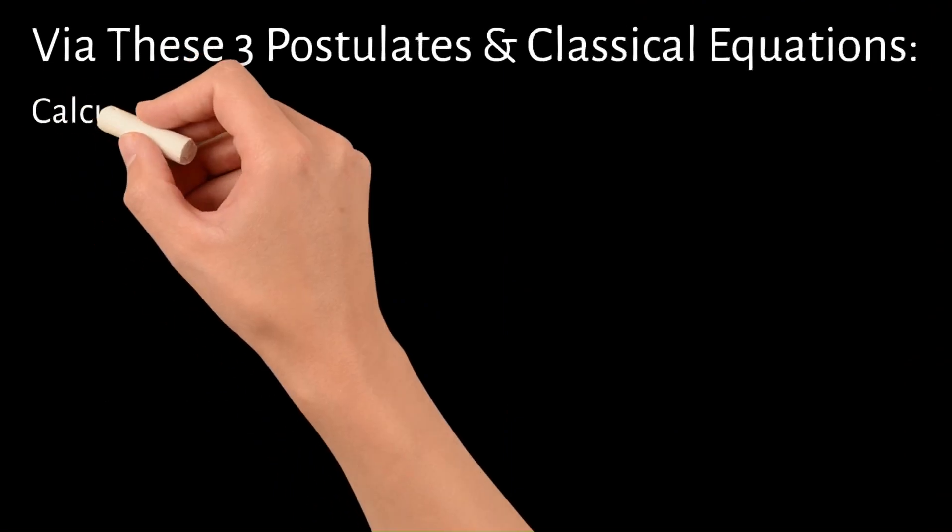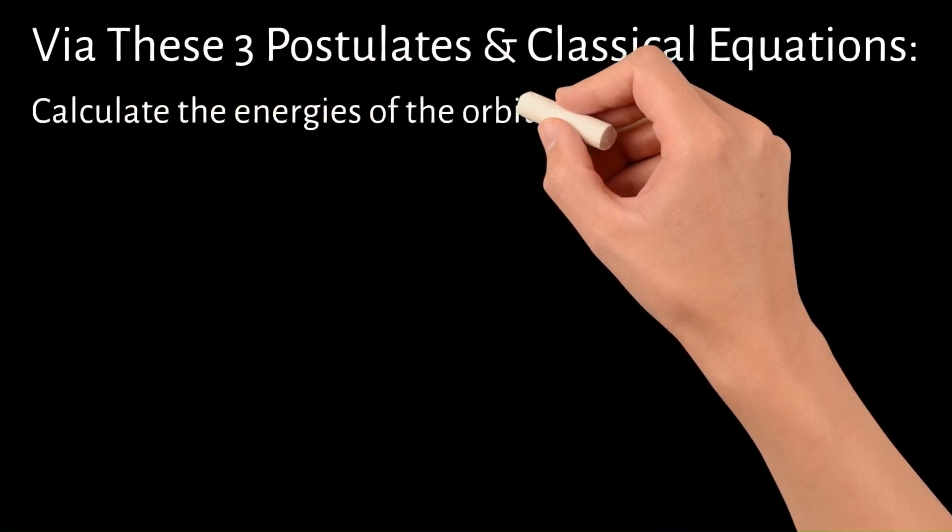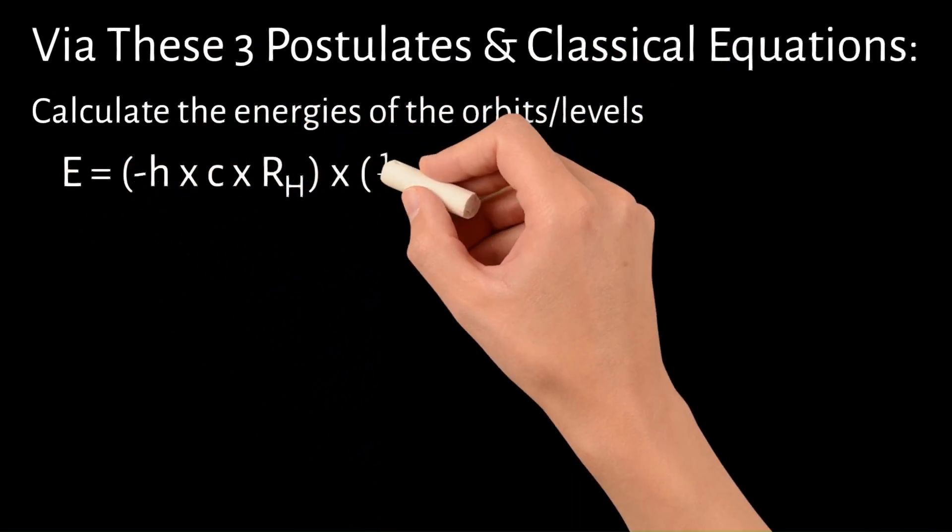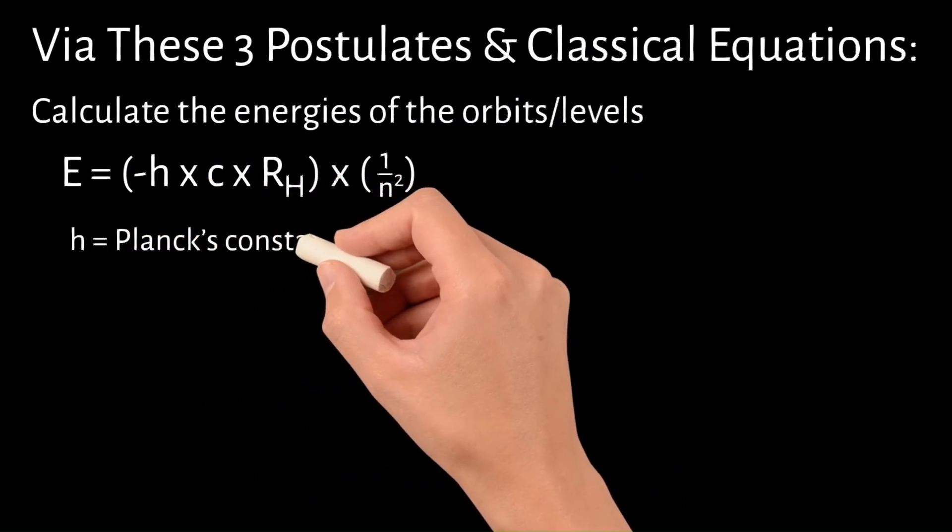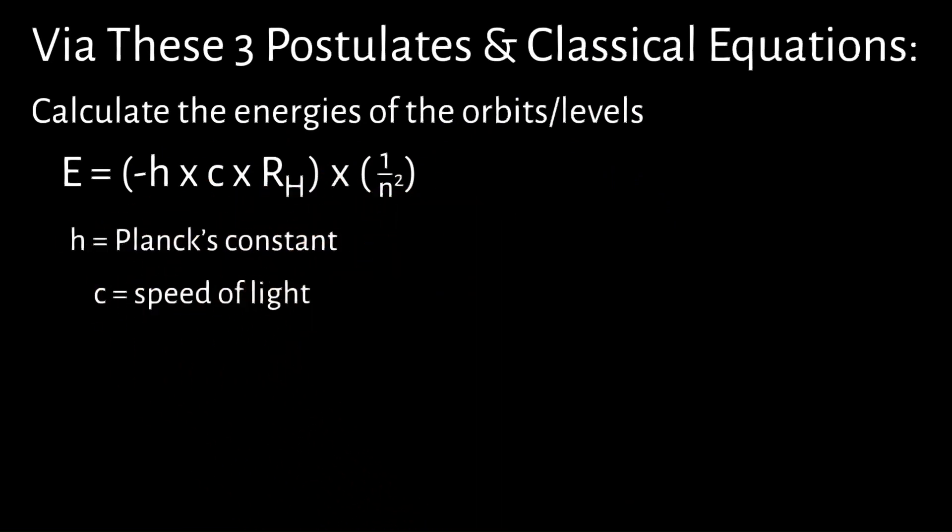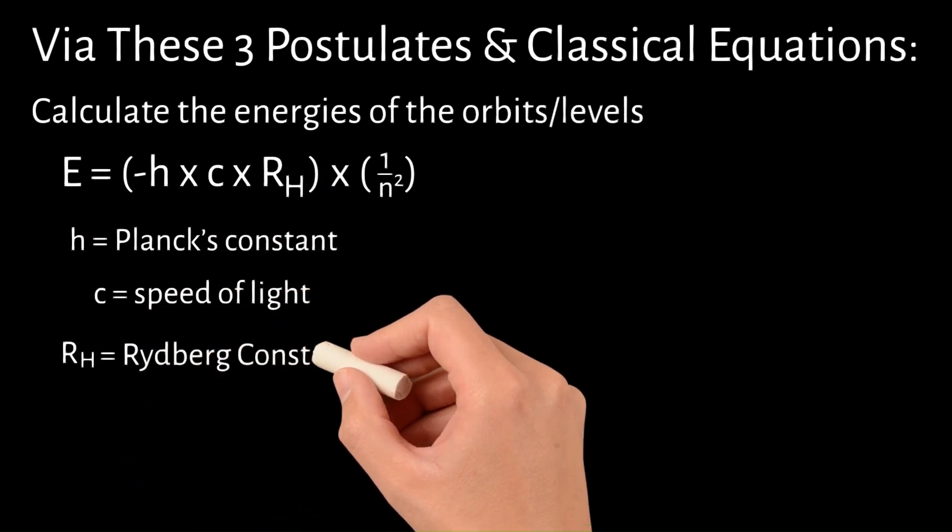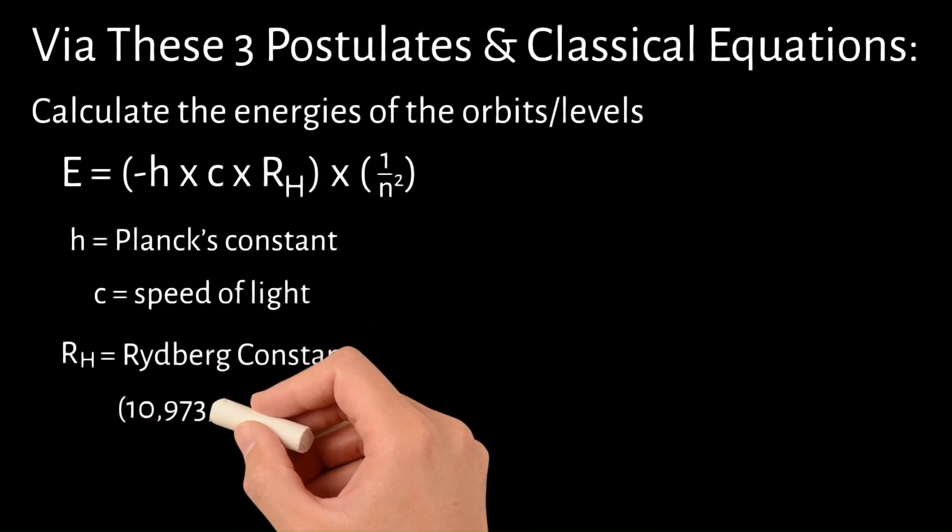5. Via these three postulates and using classical equations, Bohr was able to calculate the energies corresponding to these orbits or levels via his equation E equals negative HCRH times 1 divided by N squared, where H equals Planck's constant, C equals the speed of light, RH is the Rydberg's constant, which is 10,973,731.6 per meter,